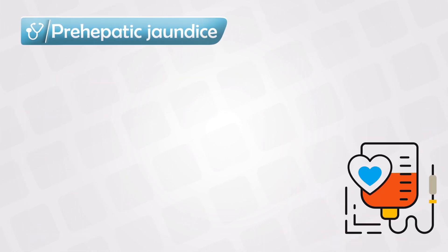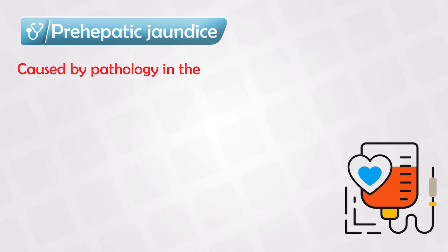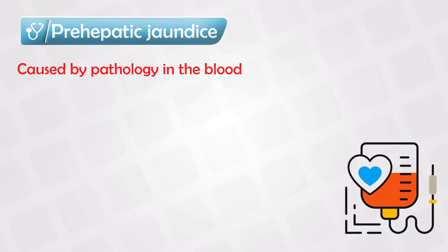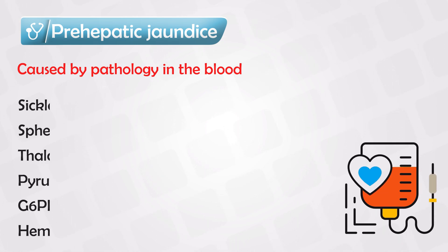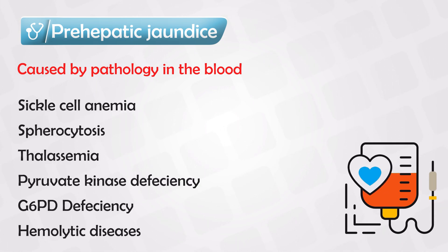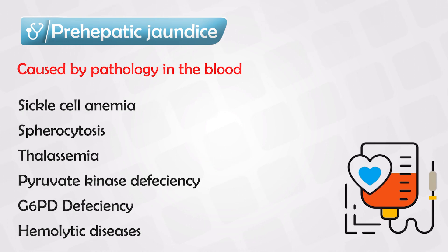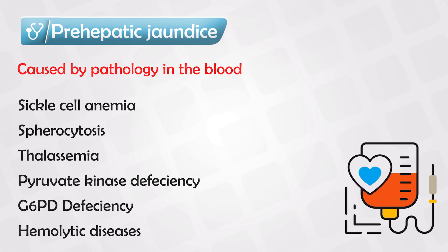Jaundice can be categorized into three categories. The first is prehepatic, which means that the cause of jaundice occurred before the liver — in the blood. The most common causes are sickle cell anemia, spherocytosis, thalassemia, pyruvate kinase deficiency, G6PD deficiency, and any hemolytic syndrome, including malaria.